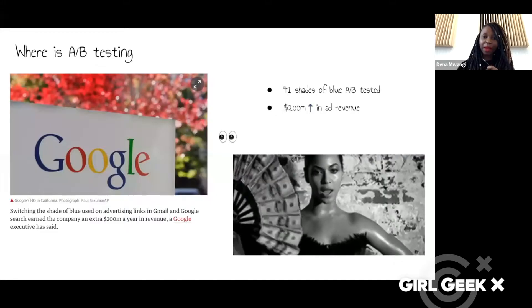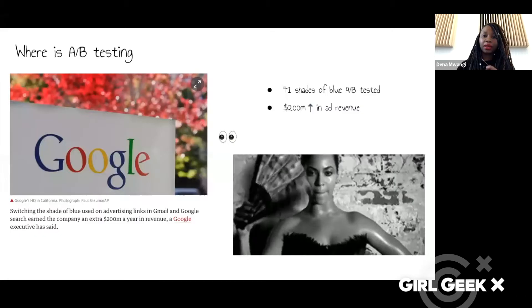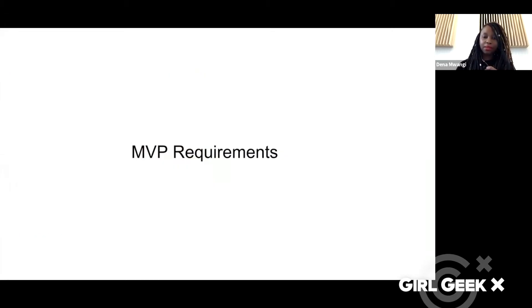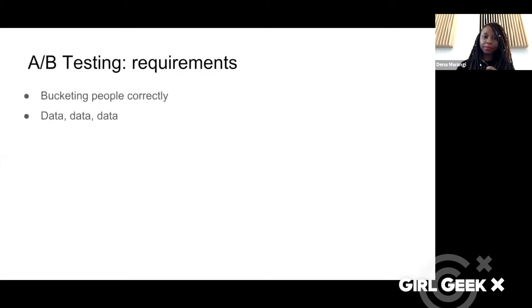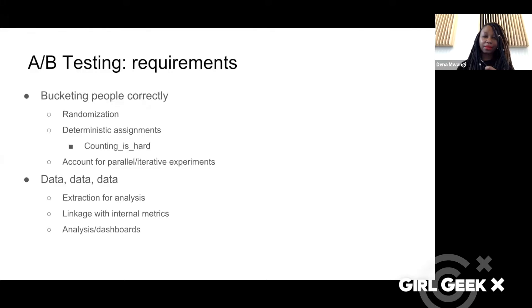So if I've convinced you that A/B testing could be useful for your organization, what do you do next? Let's talk through some MVP requirements. It really boils down to two things: how you're going to bucket people correctly, and your data — what you're getting out, because you need to know which of your variations performs best. For the first bit, you want to think about randomization. You're going to be randomly assigning users as they come through, but they'll come through your website multiple times, so these assignments need to be deterministic. Counting is hard — this is a non-trivial task.